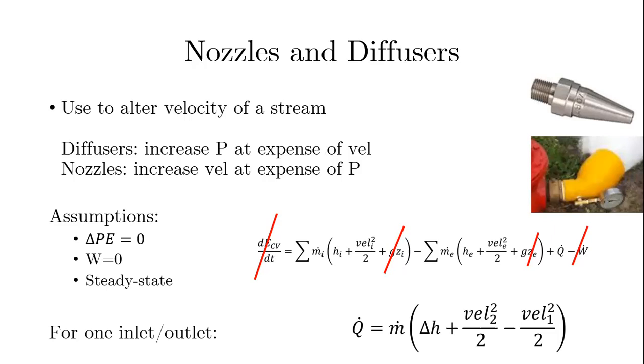We're going to make the assumption for the first law that there is no change in height, and you can see that's a pretty good assumption. We're going to assume no work is being supplied or produced from these devices, and again, steady-state. So those terms in red are canceled out. If we assume that we have only one inlet and one outlet, as you can see in those two pictures, then the mass flow rate should stay the same throughout the device. And we get the characteristic equation at the bottom.